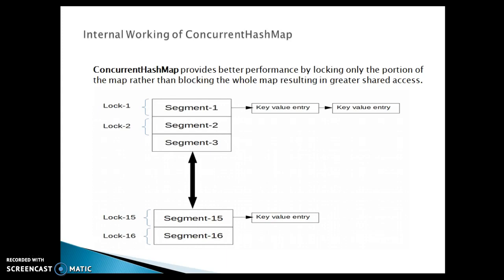That is the reason why, while iterating the map itself, you can add values to the ConcurrentHashMap. The iterator of ConcurrentHashMap is fail-safe, meaning it will not throw a ConcurrentModificationException. If you are using HashMap, however, if you try to add or delete any elements from the map while iterating, you will immediately get a ConcurrentModificationException.